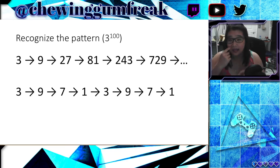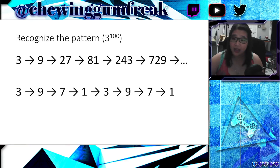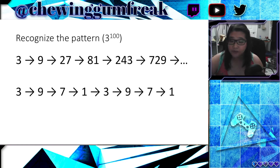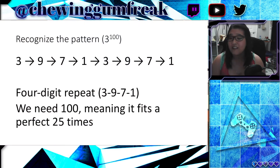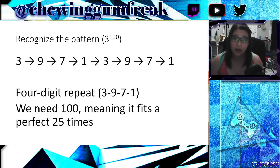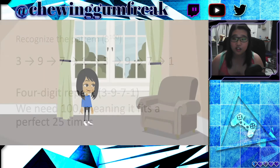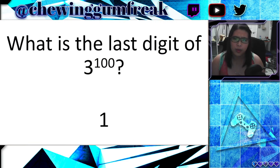The last digit goes from 3 to 9 to 7 to 1, and then the whole pattern repeats itself again: 3, 9, 7, and 1. So we have a pattern that consists of 4 units. If we're going to raise 3 to the 100th power, we know that this pattern is going to fit into that 25 times flat — a perfect 25 times. That means the last digit is going to be the last number in our pattern, and in this case that's going to be 1. Unless you have a super powerful calculator, you're not going to be able to confirm this, but once you get the pattern, you should get the solution.